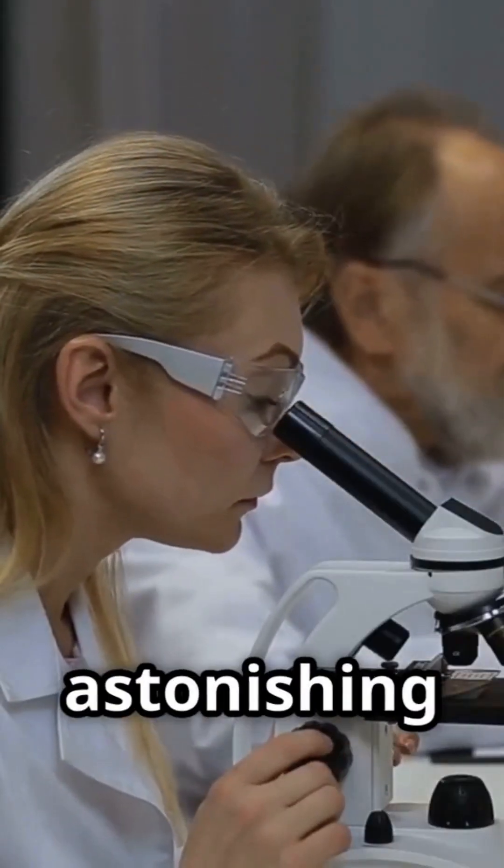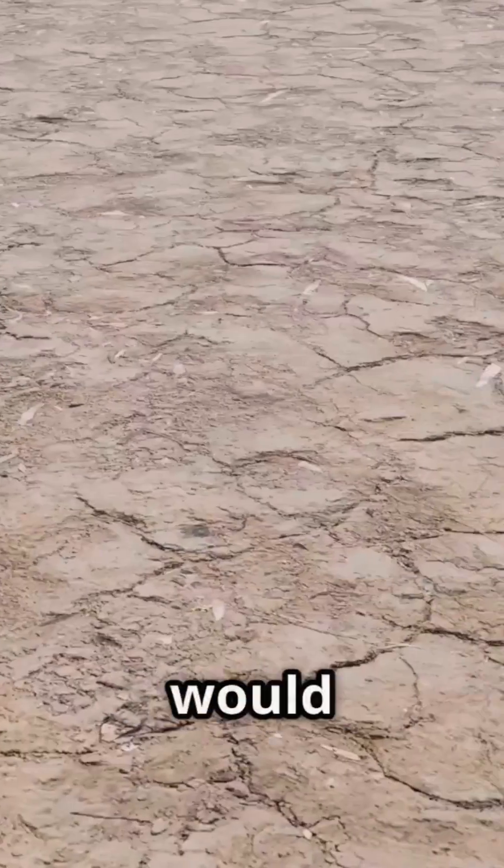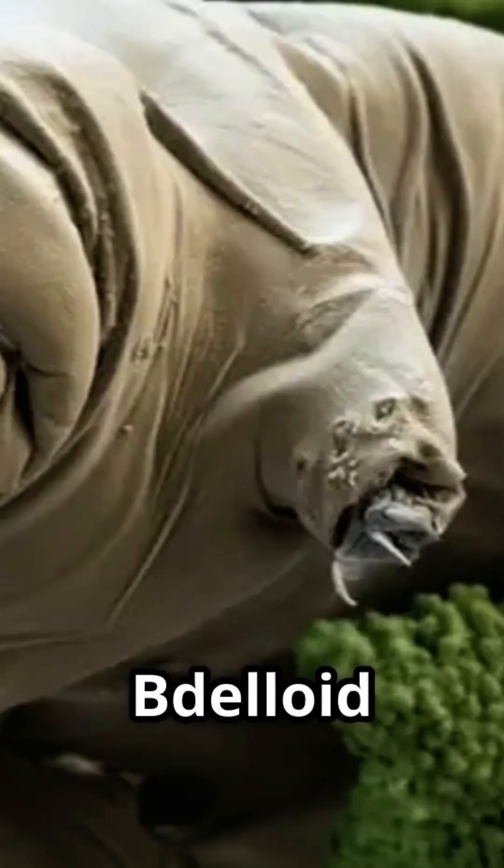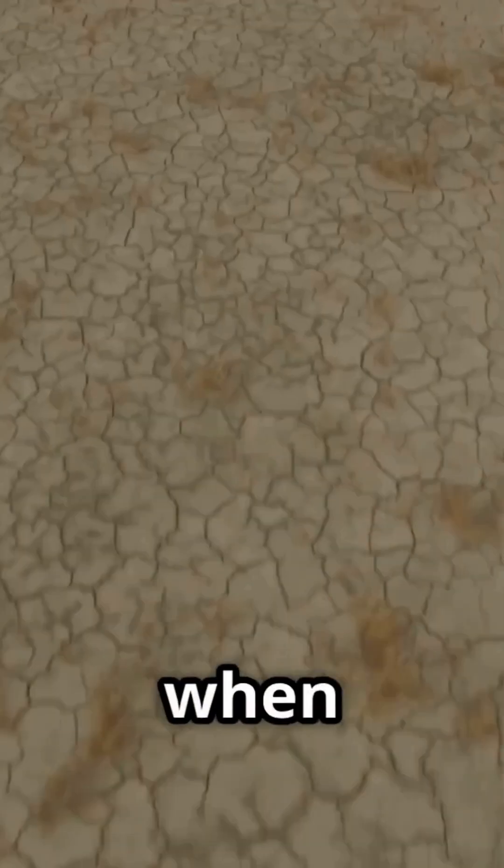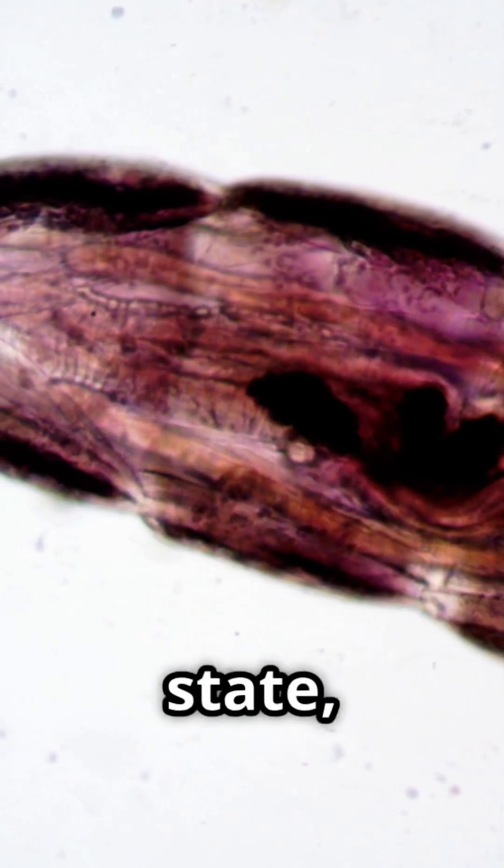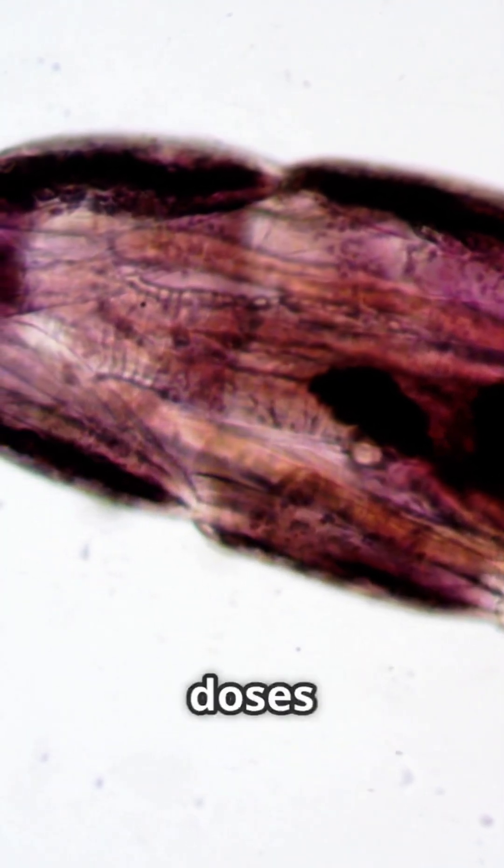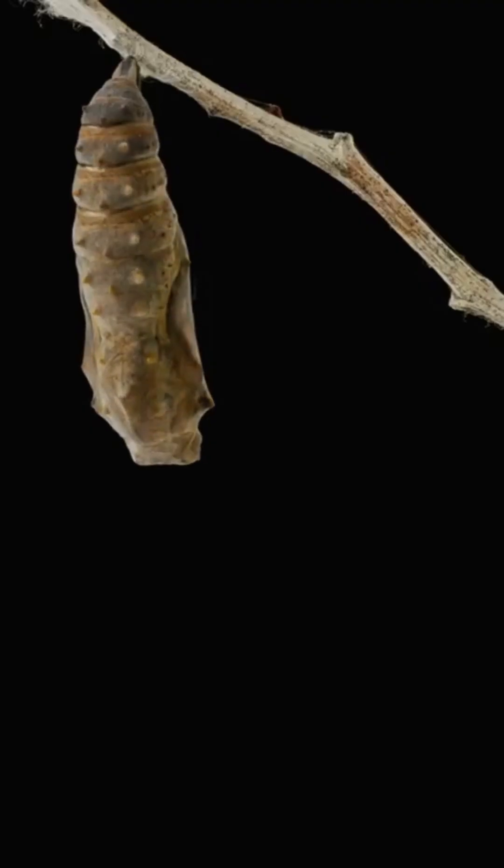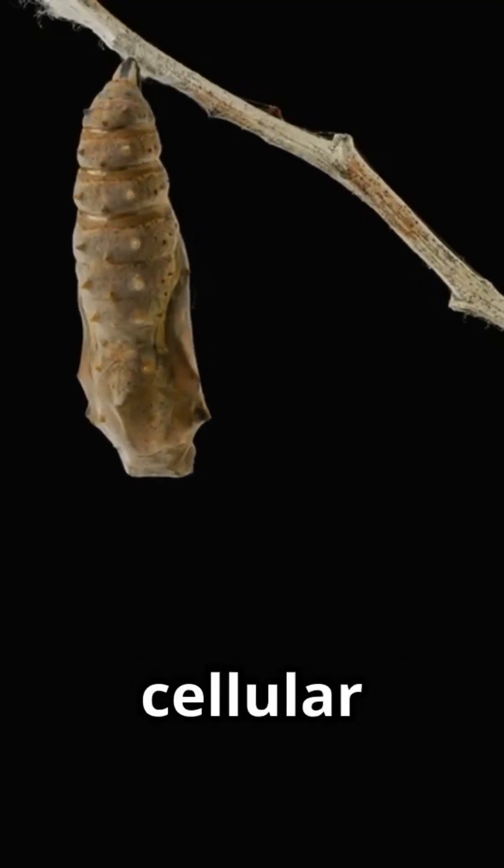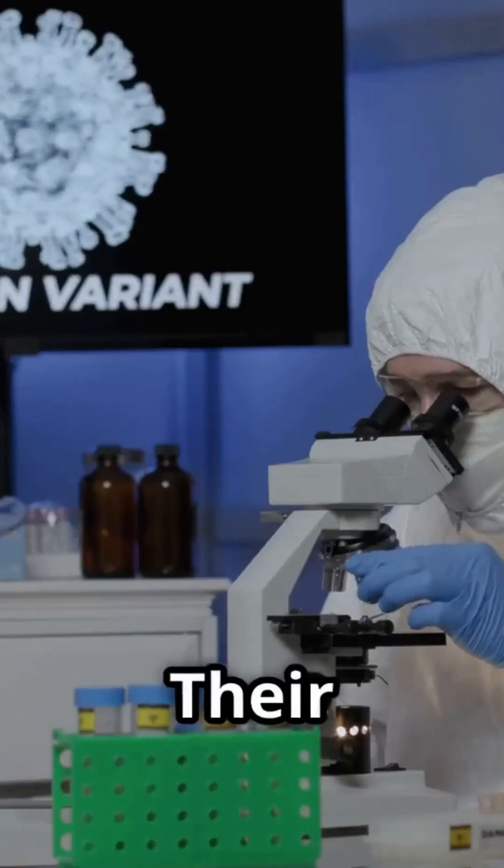One of their most astonishing features is their ability to survive extreme environmental stresses that would typically be fatal to most life forms. Bdelloid rotifers can enter a state of cryptobiosis, effectively suspending their metabolism when faced with desiccation or the complete drying out of their habitat. In this state, they can withstand not only prolonged periods without water, but also intense doses of radiation, extreme temperatures and even the vacuum of space. When rehydrated, they spring back to life with their cellular functions intact, an ability that has been likened to biological resurrection.